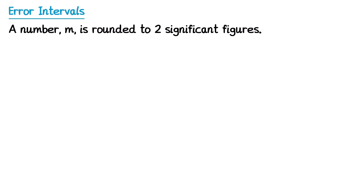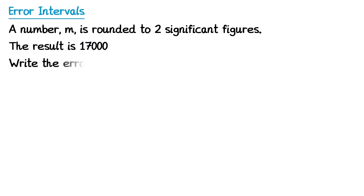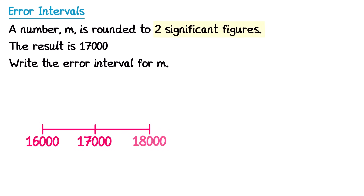In this question we have a number but it's been rounded to significant figures this time instead of decimal places, and the result is 17,000, and we need to write its error interval. So this time we need to remember it's significant figures and not decimal places. We draw a number line and place 17,000 in the middle.